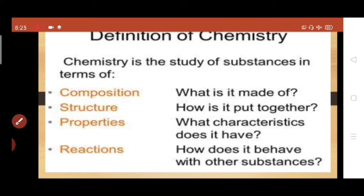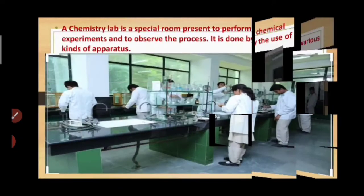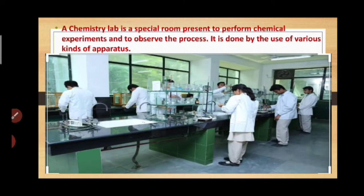In order to perform reactions and experiments, we need a special lab where all the systems and requirements are fulfilled. That room is known as the chemistry lab — a special room where chemical experiments are performed and processes are observed, using various kinds of apparatus.